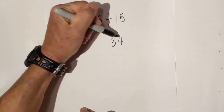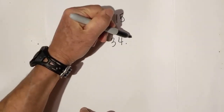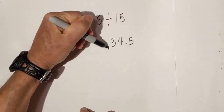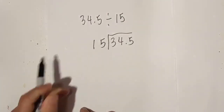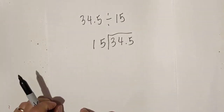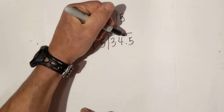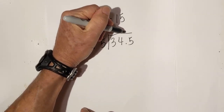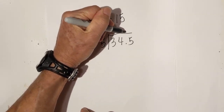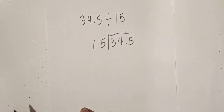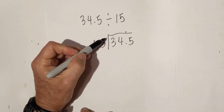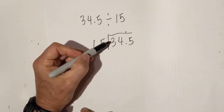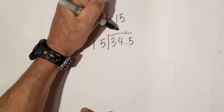Let's work one more. We have 34 and 5 tenths divided by 15. I'll rewrite it. I ask myself: is the number on the outside a whole number? Yes — so we do not need to move anything, just move the decimal point straight up. Now let's start the division: 34 divided by 15.